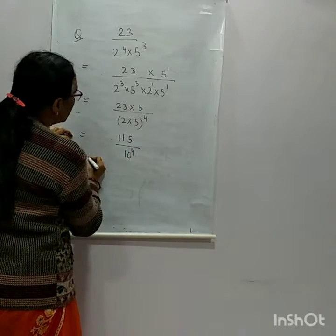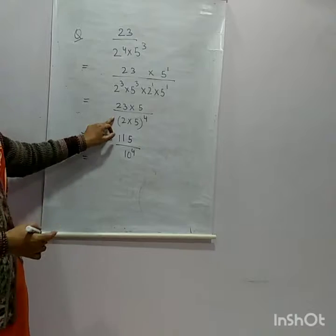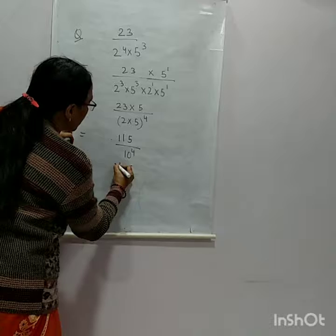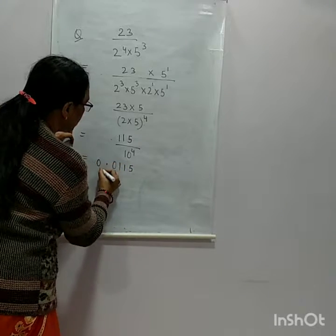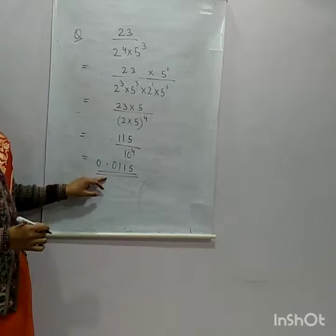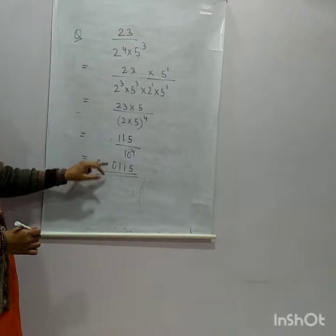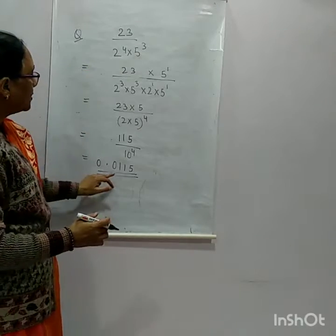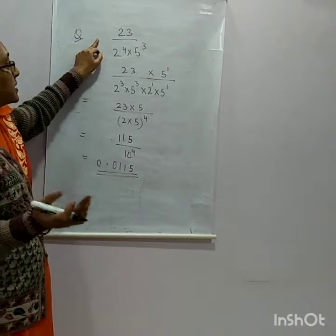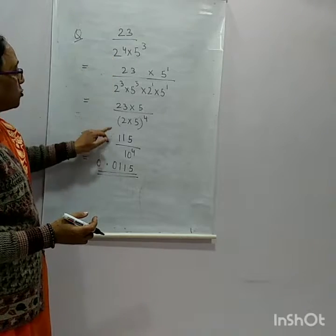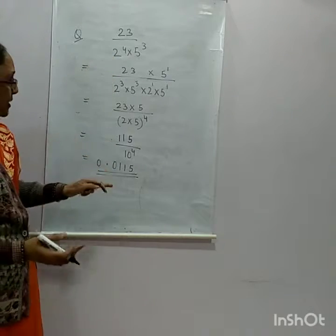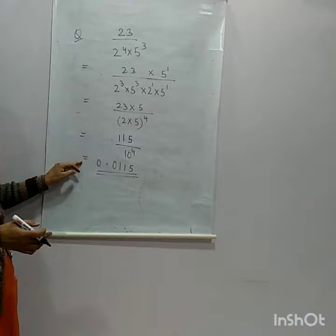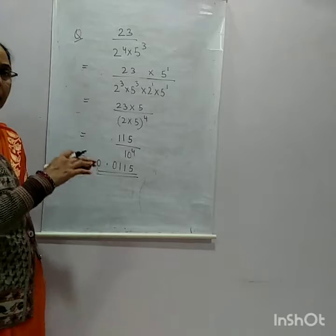Convert to base 10: multiply numerator and denominator to make the denominator a power of 10. The denominator becomes 10⁴, so the decimal terminates after 4 places. Since the question only asks for the number of decimal places, you only need to write 4.